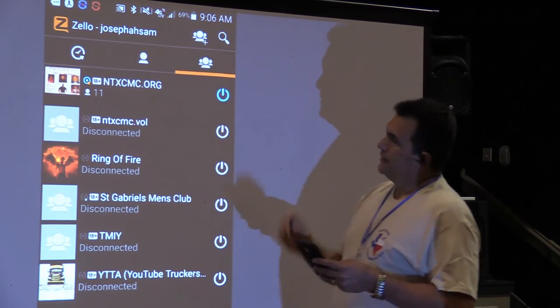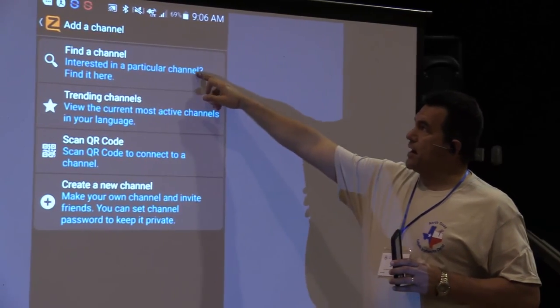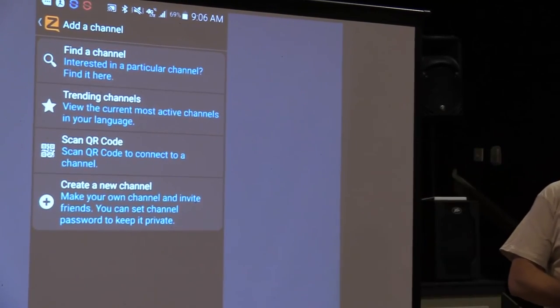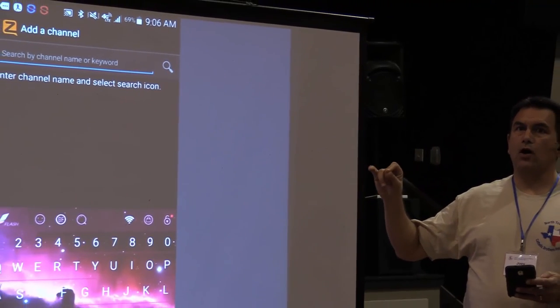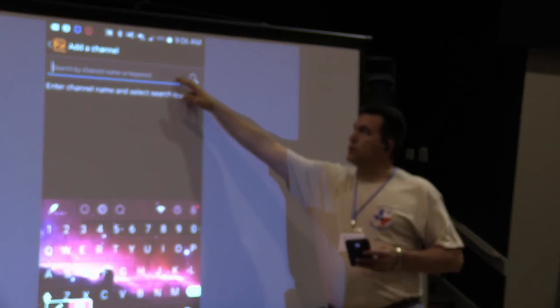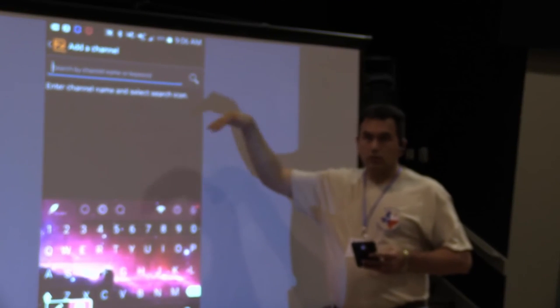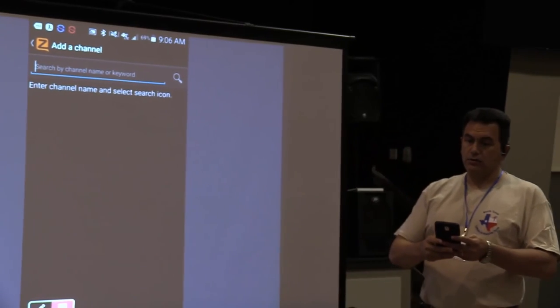Now, the little group plus sign, let me show you that. This is how you would add the channel. You would find the channel right here, click Find Channel, then you would type in that ntxcmc.ball net name or group name. Once you get that group name, then you'll add that to your groups, and then once it's there, it will show up on your group view all the time until you delete it off your phone.